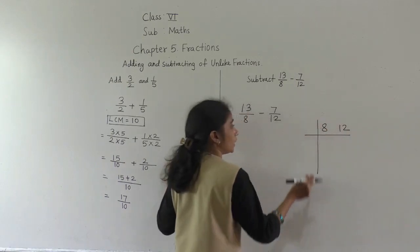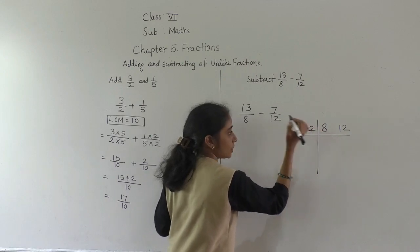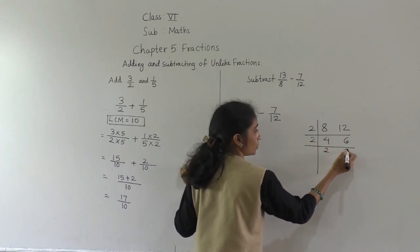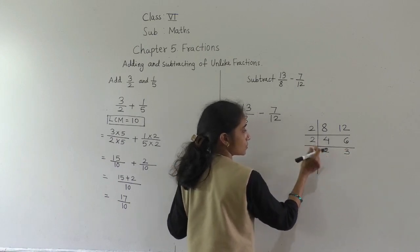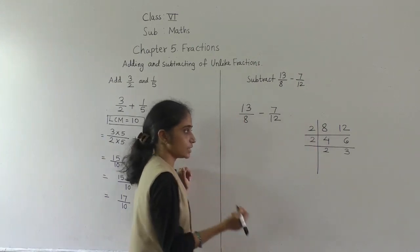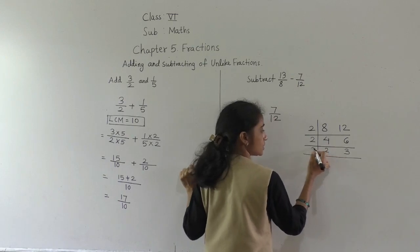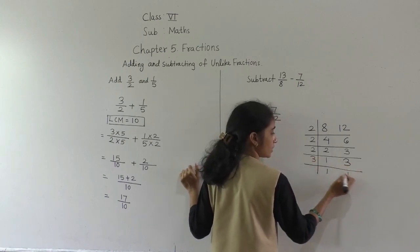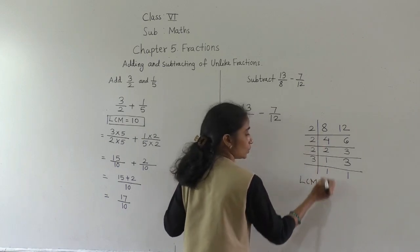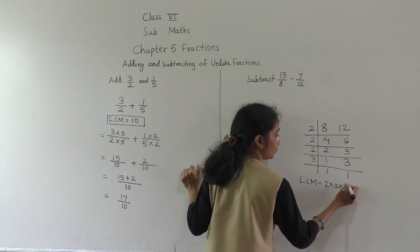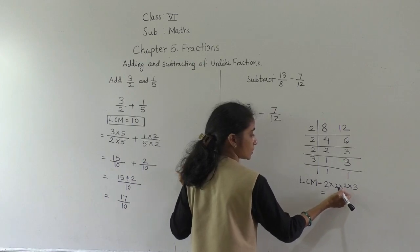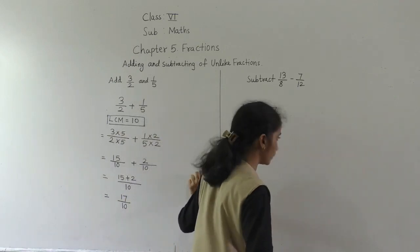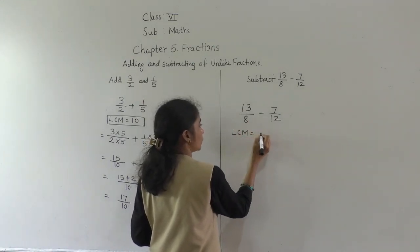Find the LCM of 8 and 12. Both are even, divisible by 2: 4 twos are 8, 6 twos are 12. Again divisible by 2: 2 twos are 4, 3 twos are 6. Then 3 ones are 3, 2 ones are 2. LCM equals 2 times 2 times 2 times 3: 3 twos are 6, 6 twos are 12, 12 twos are 24. So the LCM of 8 and 12 is 24.